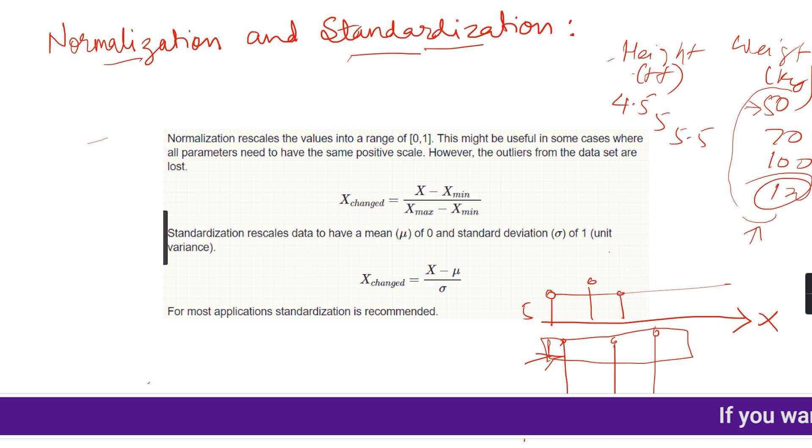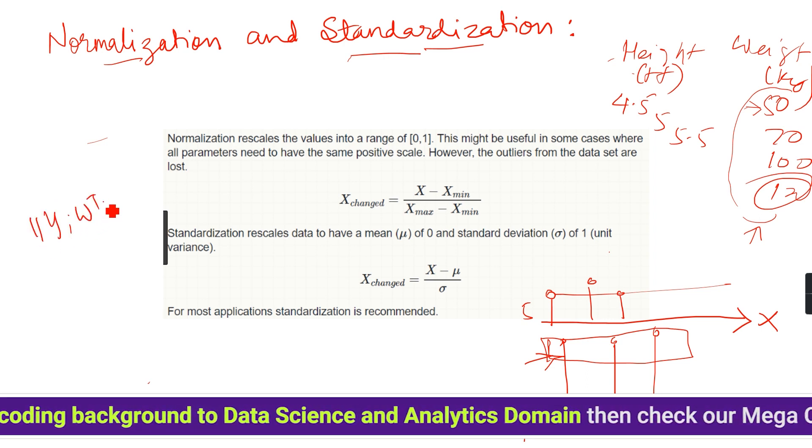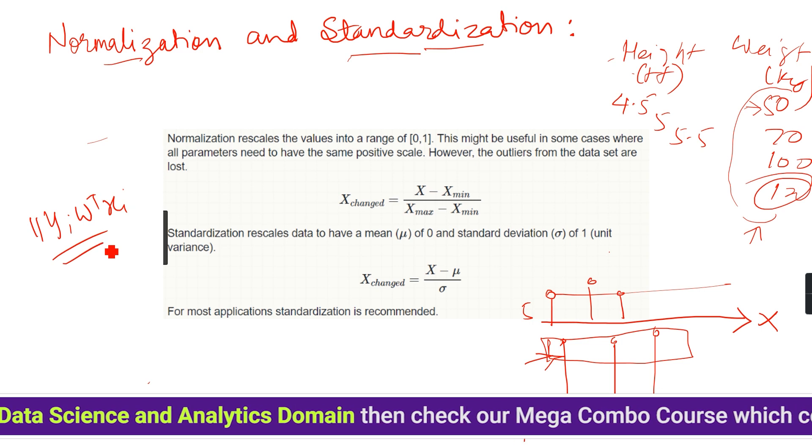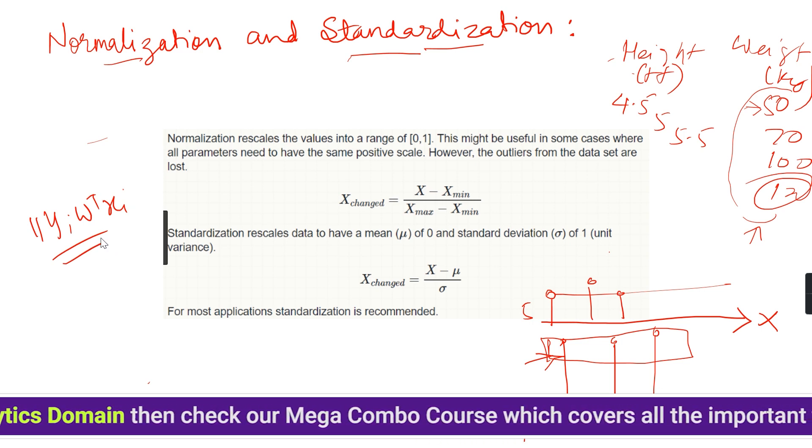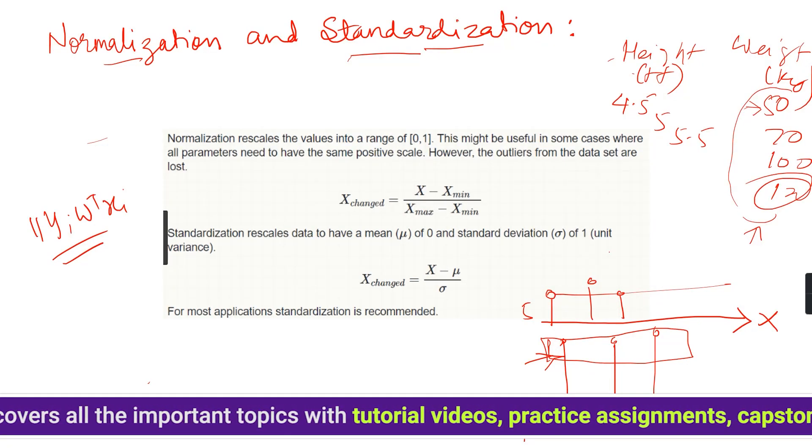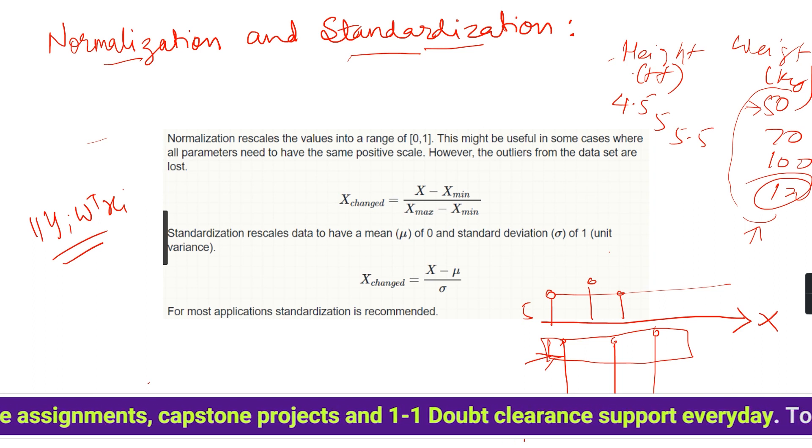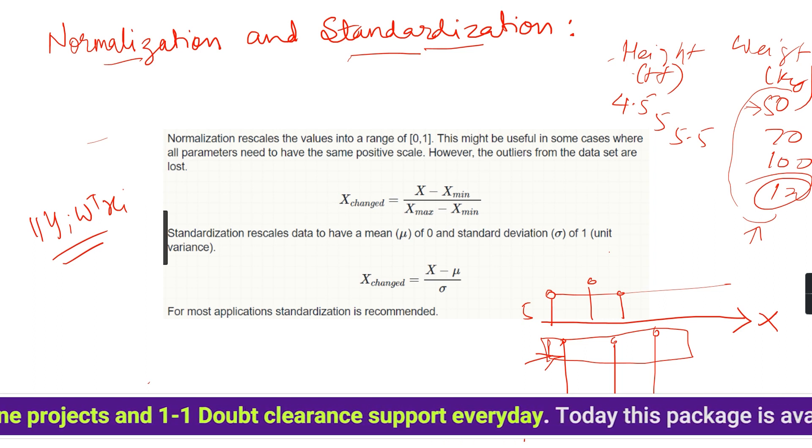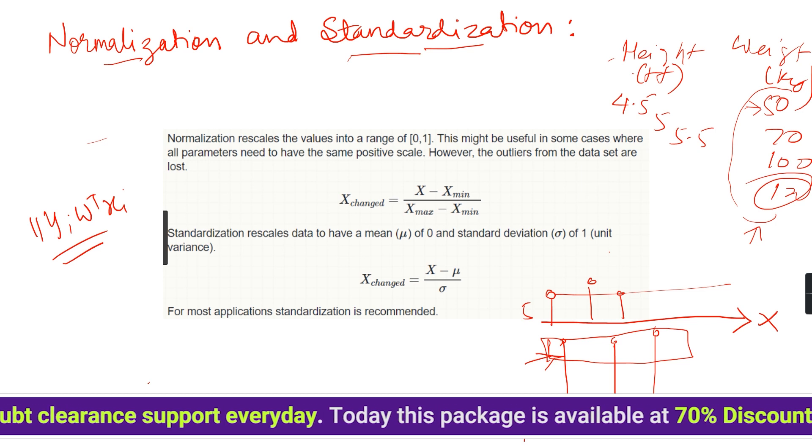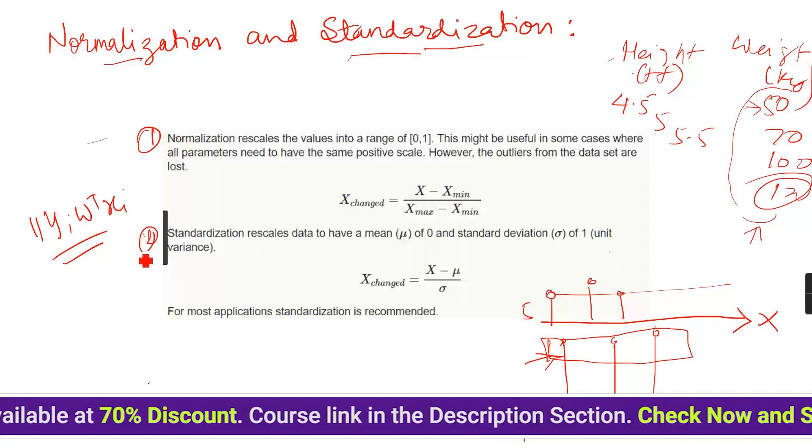But for any algorithm like logistic regression which we've seen, we assign distance as yi times wt into xi. If my points have higher distance or if my values are higher, my model will give much more importance to that. So for all those scenarios we need to scale. We have two techniques: normalization and standardization.